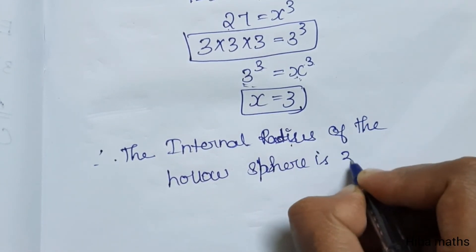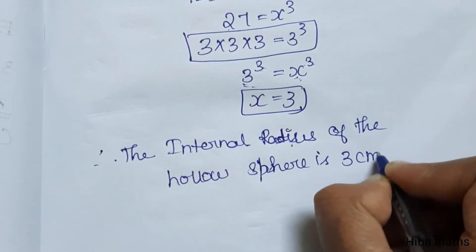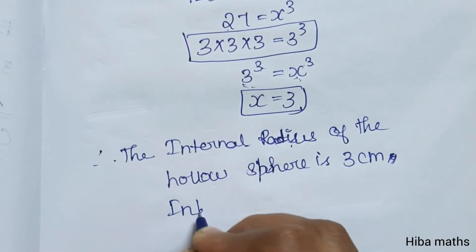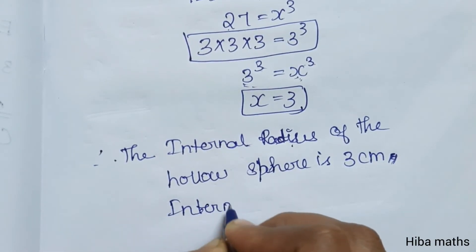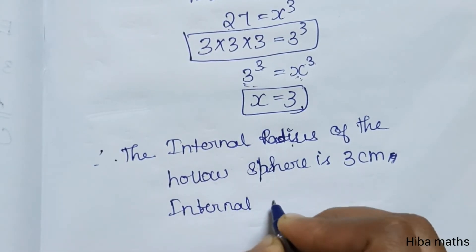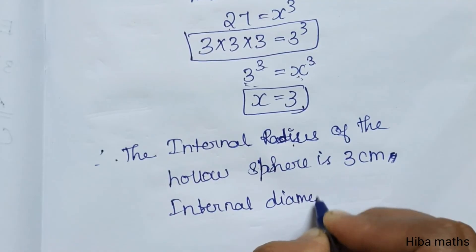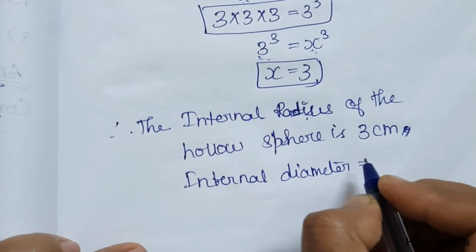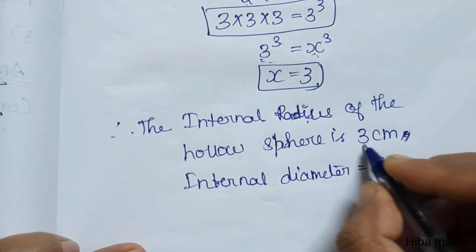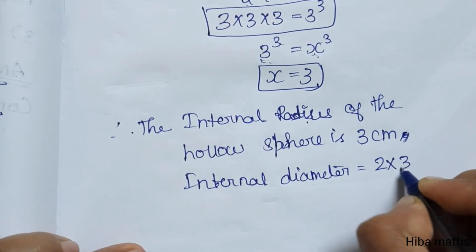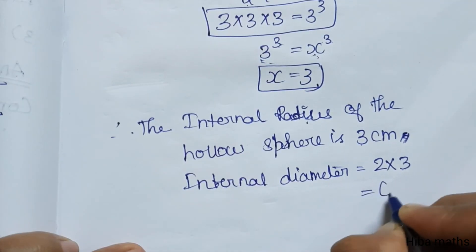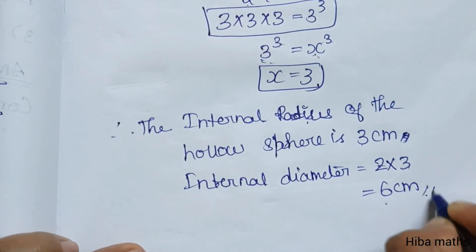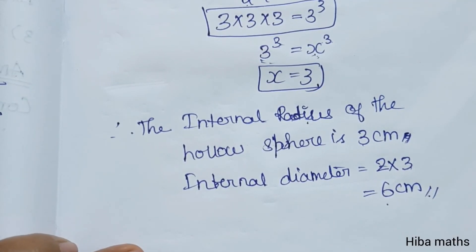The internal radius of the hollow sphere is 3 centimeters. The question asks for the internal diameter, so diameter equals 2 times radius equals 2 times 3, which is 6 centimeters. This is the internal diameter.